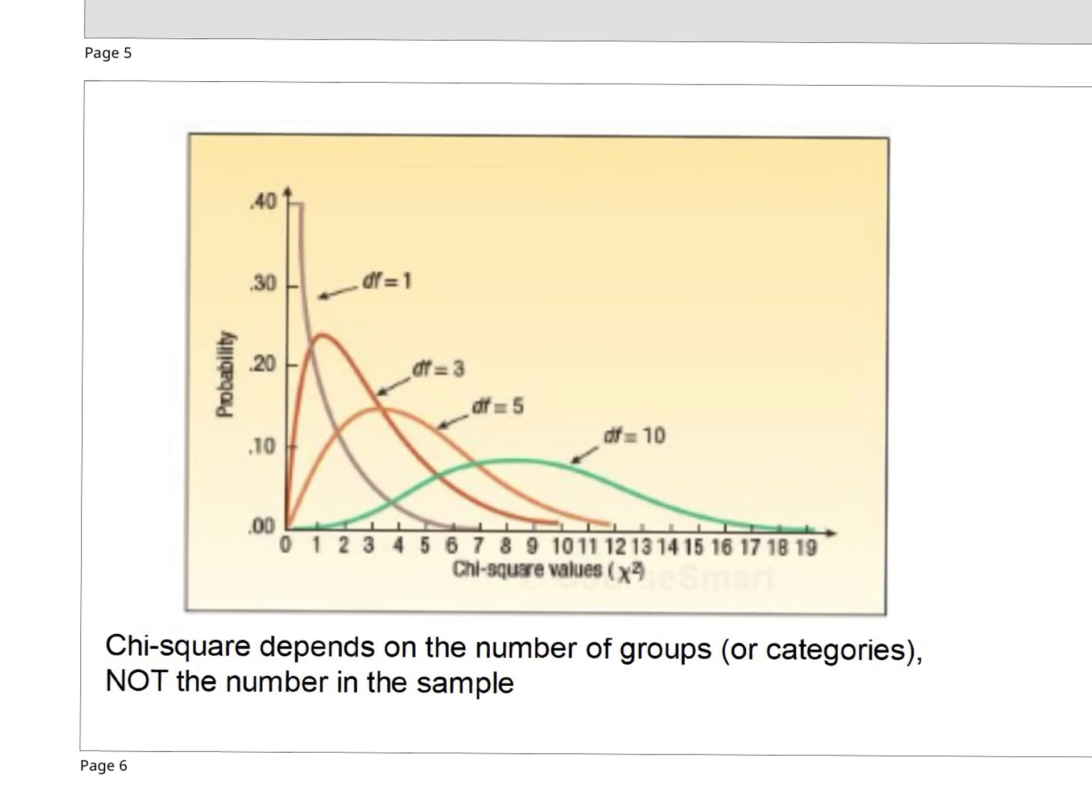One more tidbit before our first example. Chi-squares are going to be skewed to the right, and they're based off of degrees of freedom. Except degree of freedom in this case is called k minus 1, where k stands for the number of groups, not the number of people. We'll still compare the chart value, new chart for chi-square, to that calculated value mentioned earlier.